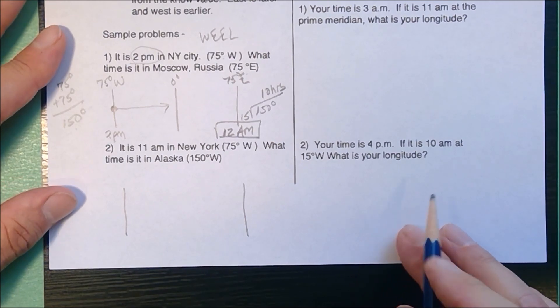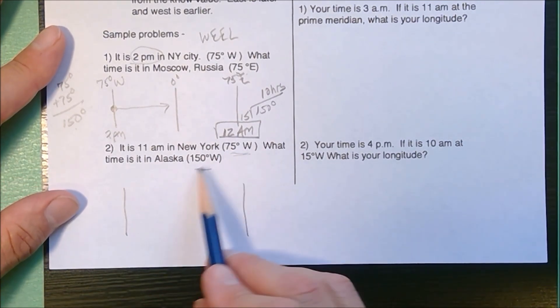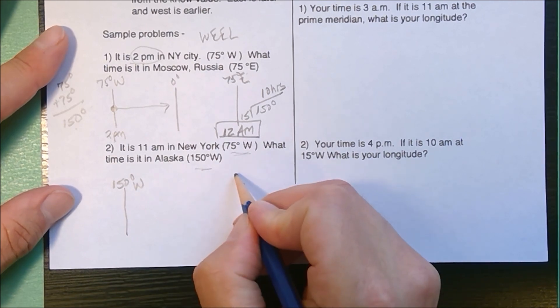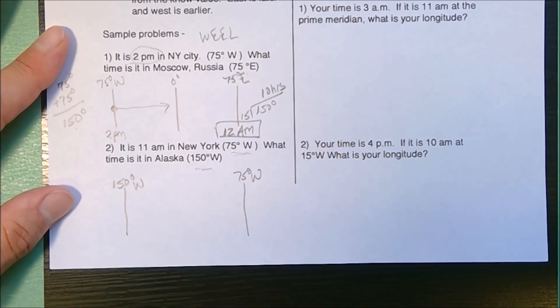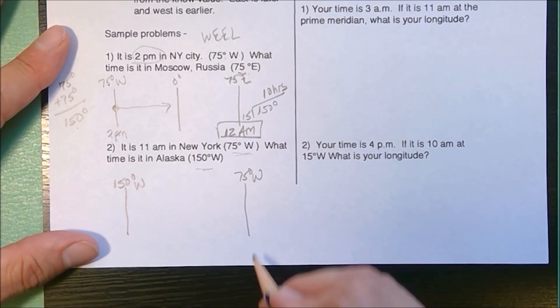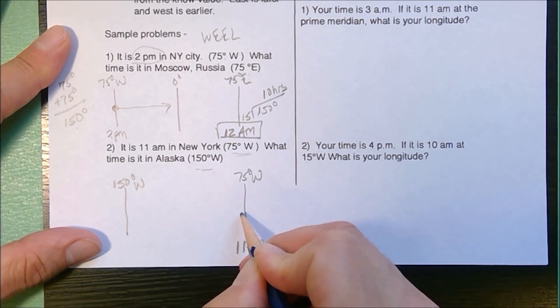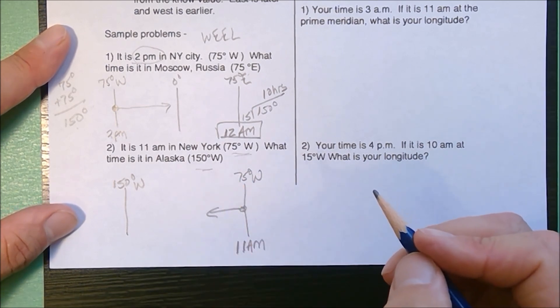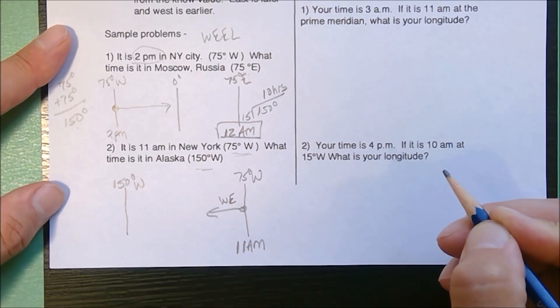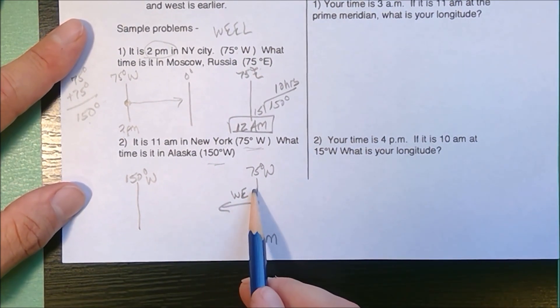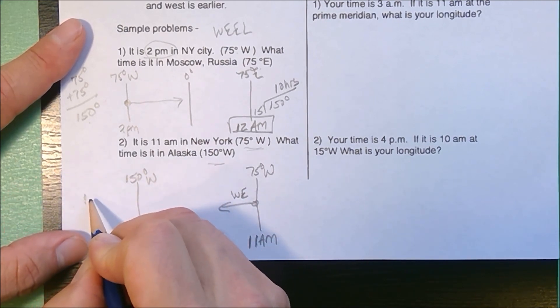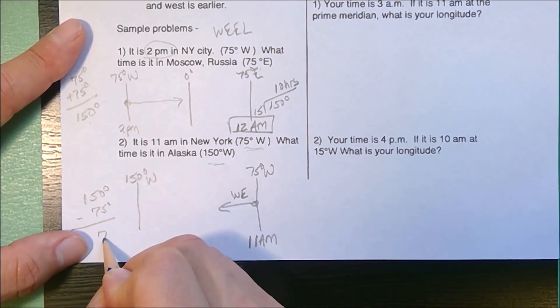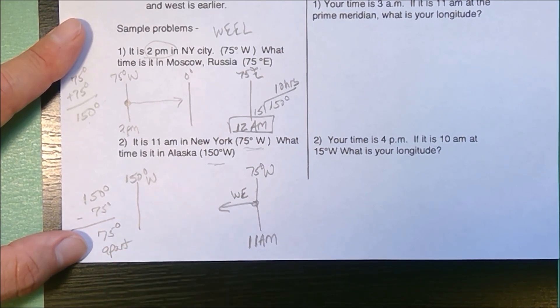My map was two vertical lines: 75 and 150. Both are west, but 150 west, Alaska, is farther west than 75 degrees west. Now it's 11 a.m. in New York, so I'm going to put the time on the bottom. Clearly I'm moving farther west. The first problem was east is later, but this one, west is going to be earlier in the day. To start at 75 and move to 150, these are on the same side. So I take my 150 degrees, subtract the 75, and I get 75 degrees apart.